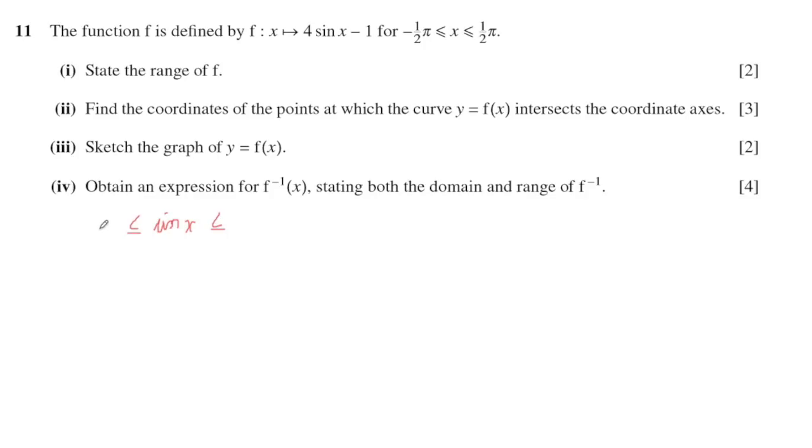When you have 4sin(x), it means multiply 4 with the sine inequality, and then take minus 1. So the inequality is: multiply minus 1 with 4sin(x), giving -4 ≤ 4sin(x) ≤ 4, then subtract 1.